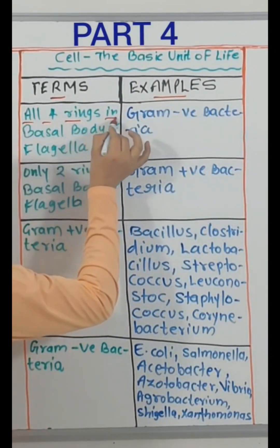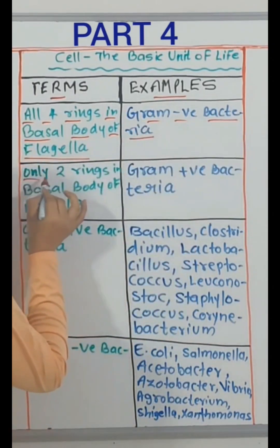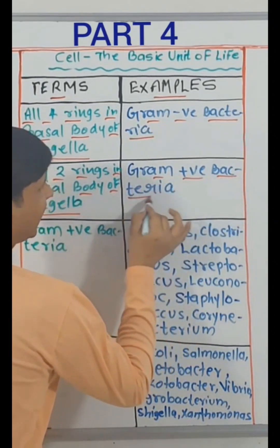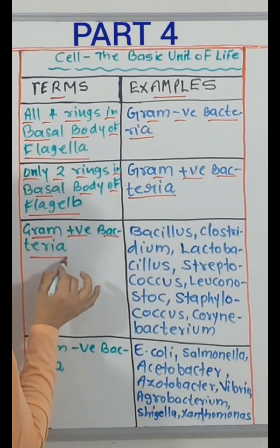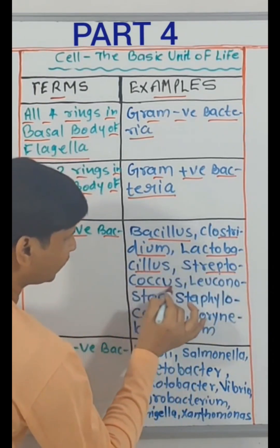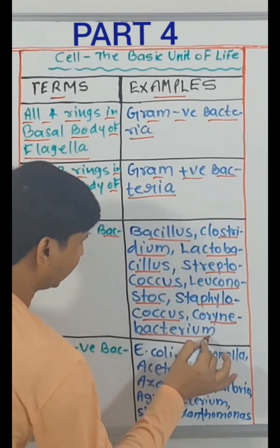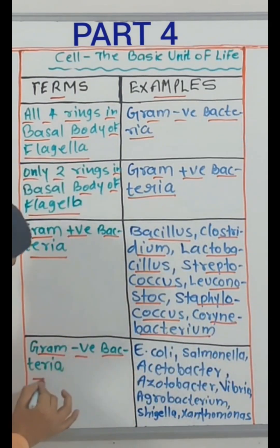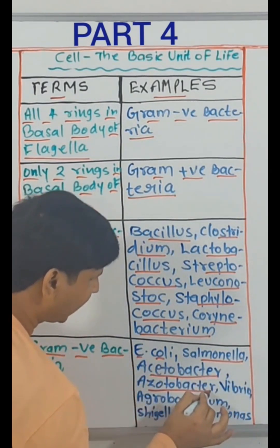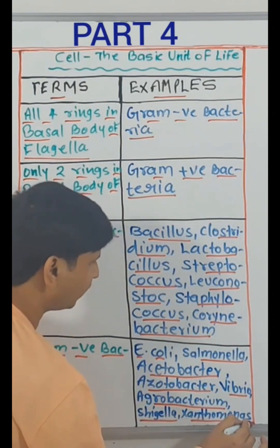All four rings in basal body of flagella — gram-negative bacteria. Only two rings in basal body of flagella — gram-positive bacteria. Gram-positive bacteria: Bacillus, Clostridium, Lactobacillus, Streptococcus, Leuconostoc, Staphylococcus, Corynebacterium. Gram-negative bacteria: E. coli, Salmonella, Acetobacter, Azotobacter, Vibrio, Agrobacterium, Shigella, Xanthomonas.